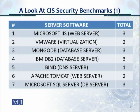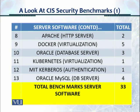For server software, you have Microsoft IIS, VMware, MongoDB, IBM DB2, BIND — which is for DNS servers — Apache Tomcat, and Microsoft SQL Server. On the right side, you see the totals for the various benchmarks available. You also have Apache, Docker, Oracle Database Server, Kubernetes, MIT Kerberos, Oracle MySQL. There are 33 benchmarks in total for server software.